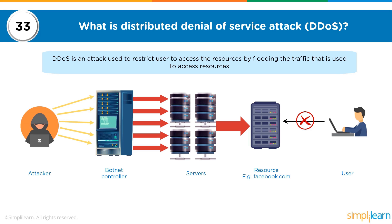There are two key terms here: a bot and a botnet. A bot is software that, once installed on a victim's machine, allows the hacker to send remote commands to that machine to generate activity. Once enough machines have bots installed, the collection of these machines is known as a botnet. The attacker then instructs the entire botnet to generate data traffic targeted at a server, bogging it down and preventing users from accessing that resource.